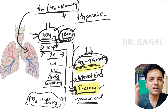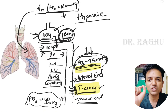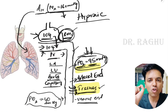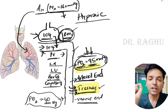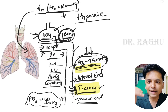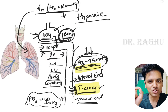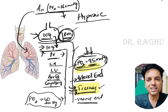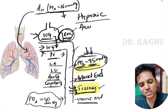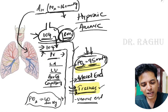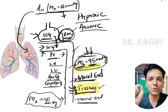Once oxygen enters the arterial blood, it binds with hemoglobin — 97% of oxygen transported to tissues is carried as oxyhemoglobin. If hemoglobin content is less, there will again be lack of oxygen supplied to the tissues. Hypoxia resulting from this reason is called anemic hypoxia, because it occurs due to lack of hemoglobin.